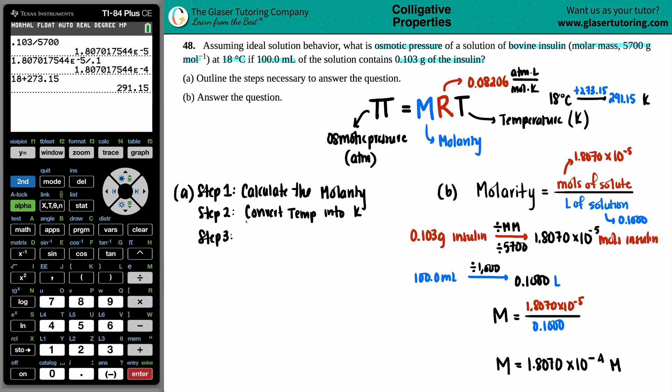So step three, calculate osmotic pressure. Big pi equals molarity, which is the 1.8070 times 10 to the negative 4th, times the R value 0.08206, times by the temp, 291.15.